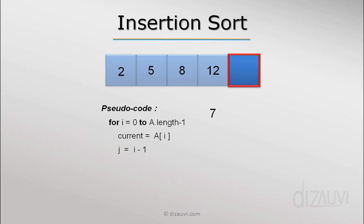We do this until either we have reached the leftmost end of the array or the elements at index j are greater than the current element. We can do this in a while loop.